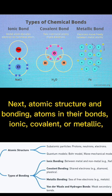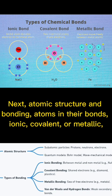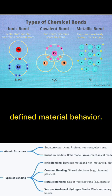Next, atomic structure and bonding. Atoms and their bonds—ionic, covalent, or metallic—define material behavior.